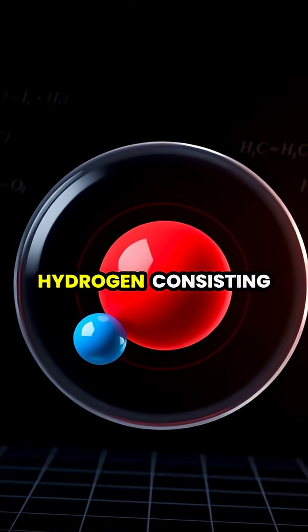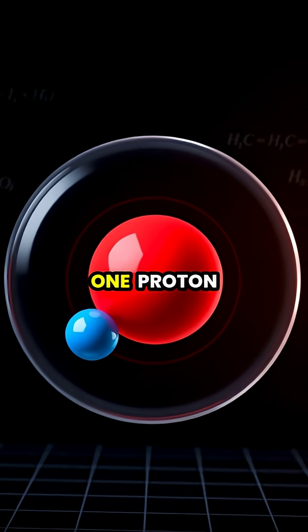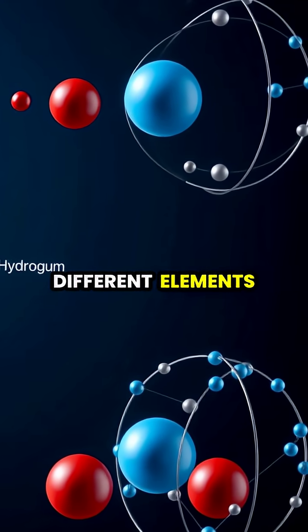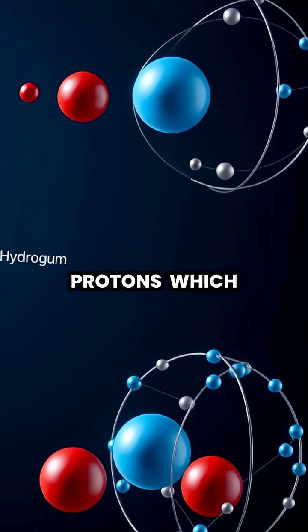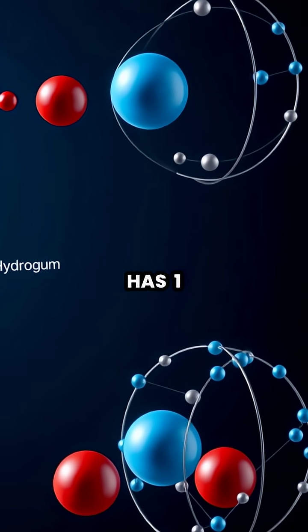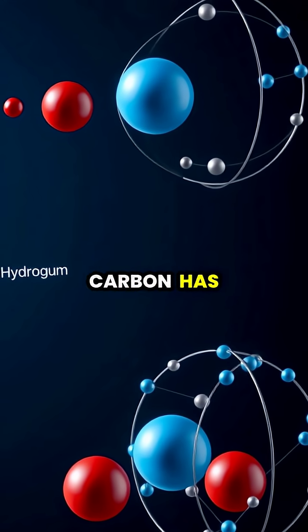The simplest atom is hydrogen, consisting of just one proton in its nucleus and one electron orbiting around it. Different elements have different numbers of protons, which is known as the atomic number. Hydrogen has one, helium has two, and carbon has six protons.